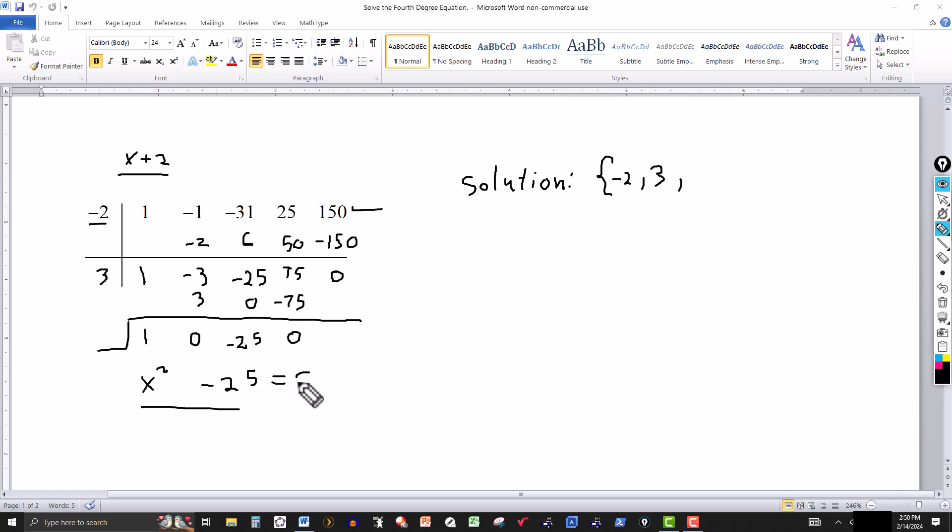Then we want to know when is this expression 0? x squared minus 25 equals 0. Once you get it to this point, you can factor it: x minus 5 and x plus 5. Is this equal to 0? One of the factors, or both, have to be 0 for the product to be 0. So you set each equal to 0 and solve for x: x equals 5 and x equals negative 5. So the complete solution would be 5, negative 5, and of course negative 2 and 3.